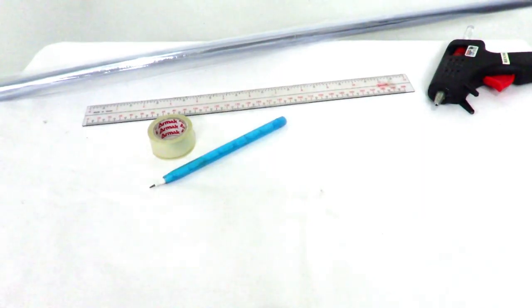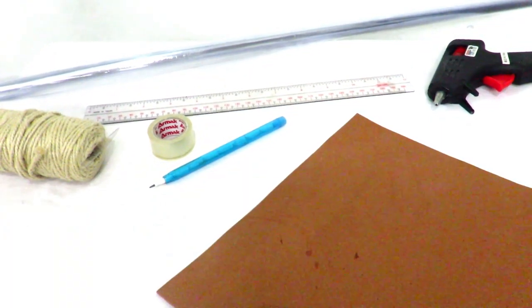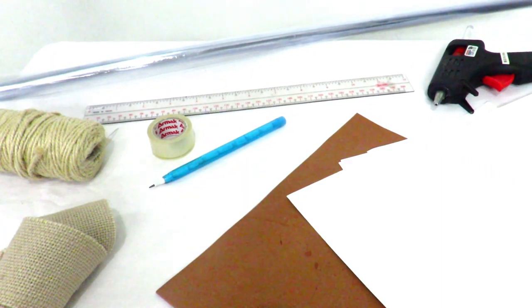The things you'll need for this project are clear plastic wrap, hot glue gun, ruler, tape, pencil, twine, brown felt paper, thick white papers, a strip of burlap, and scissors.